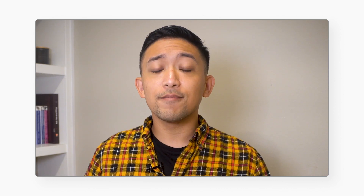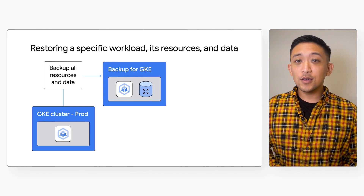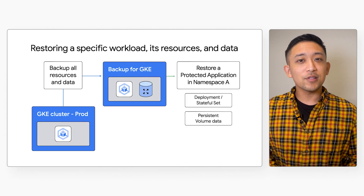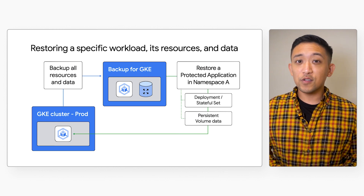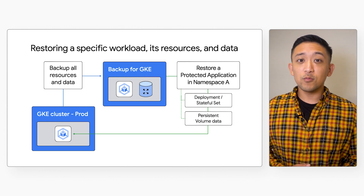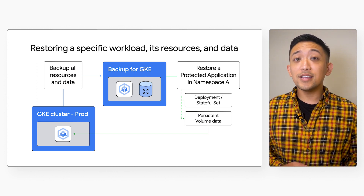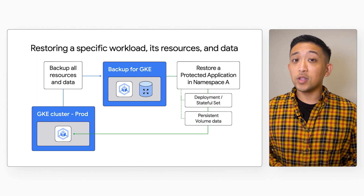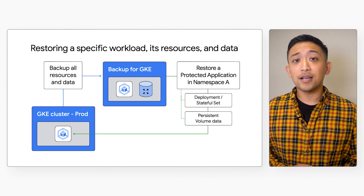To get started, you can enable Backup for GKE on an existing GKE cluster without any changes to your Kubernetes resource definitions. But what if you wanted more specific logic orchestrating backups for a set of components? Backup for GKE has something for that too. You can create a custom resource called a Protected Application, which can group together specific resources within a namespace that you want to back up and restore. This custom resource can also carry out additional logic specific to your application, with support for pre- and post-backup scripts.